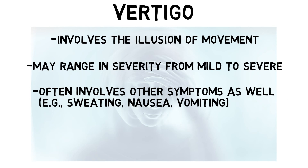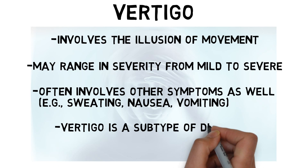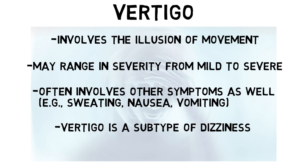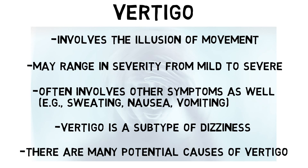While vertigo is often described as dizziness, dizziness is a more general term, and vertigo is considered a subtype of dizziness. There are many potential causes of vertigo, including conditions such as benign paroxysmal positional vertigo, migraine, or Meniere's disease, as well as a number of other causes such as infections, head injuries, and tumors, among others.